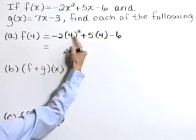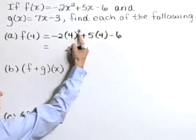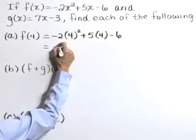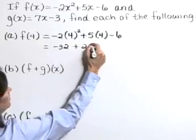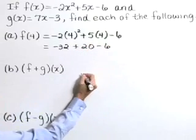This gives negative 2 times 4 squared plus 5 times 4 minus 6. That's 4 squared is 16 times negative 2 is negative 32 plus 20 minus 6.